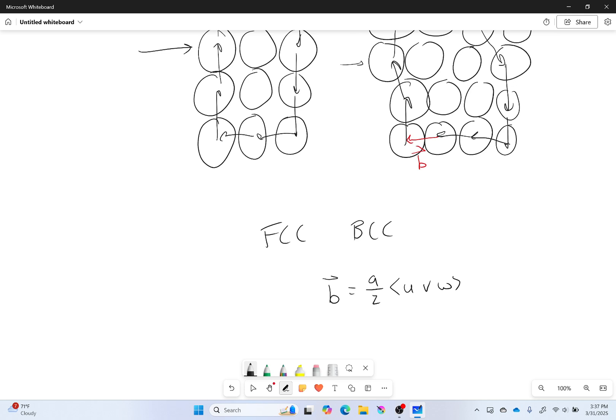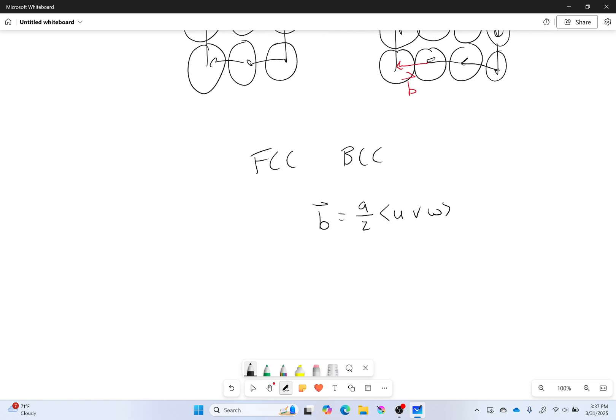So what we're going to do is find the Burgers vector and find its length. We'll do it for aluminum. First off, aluminum is a face-centered cubic structure. Other things I can look up online are that the radius of an aluminum atom is equal to 0.1431 nanometers.